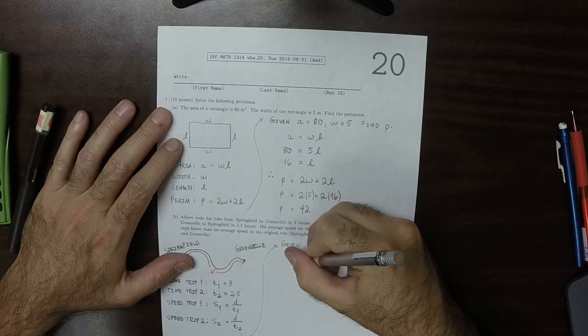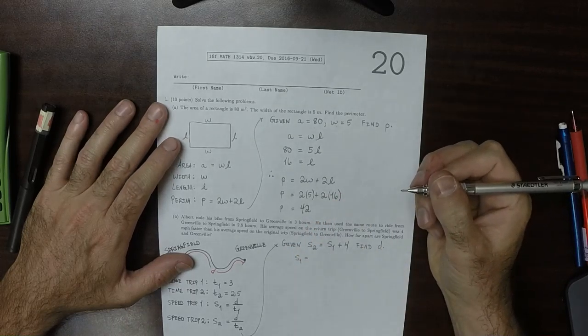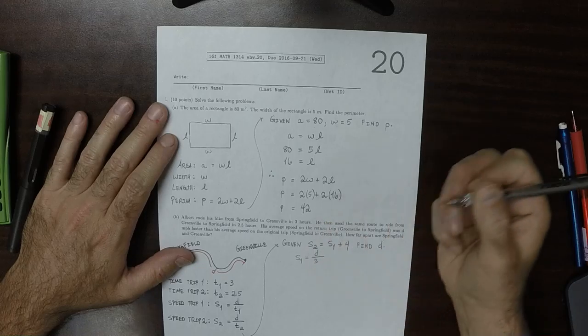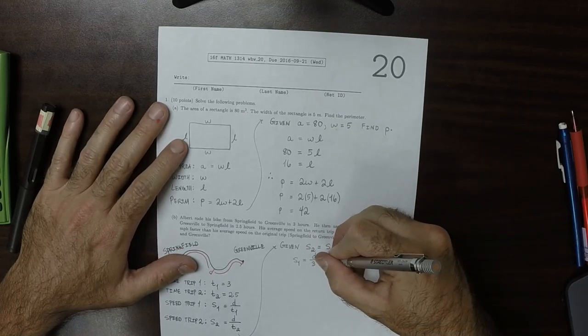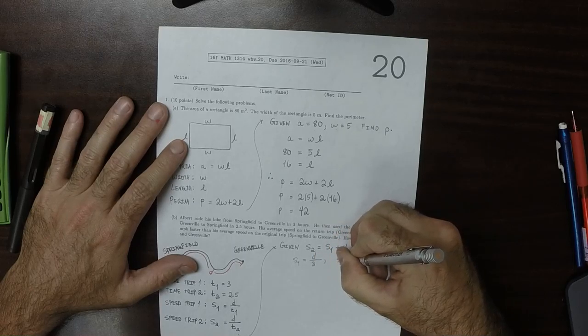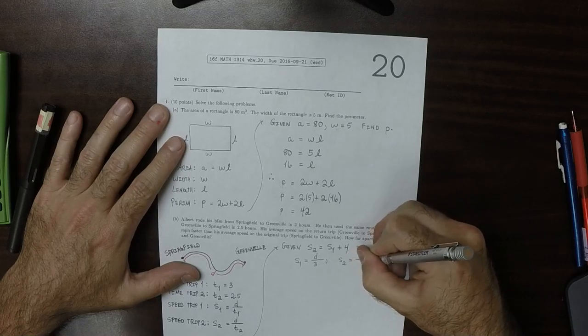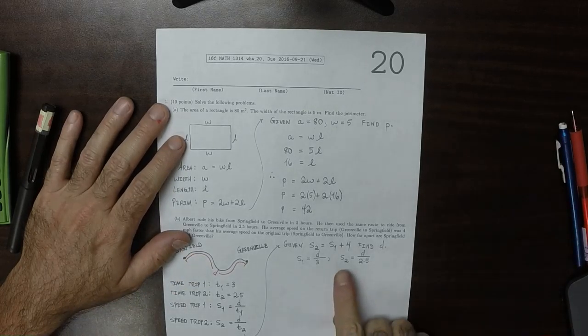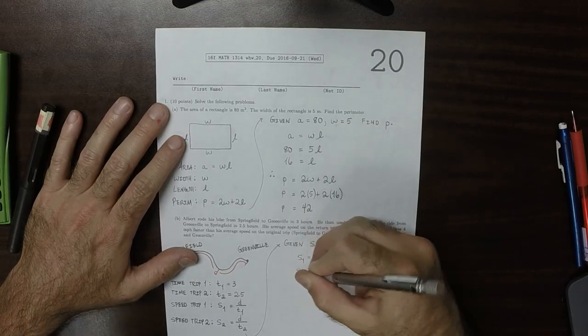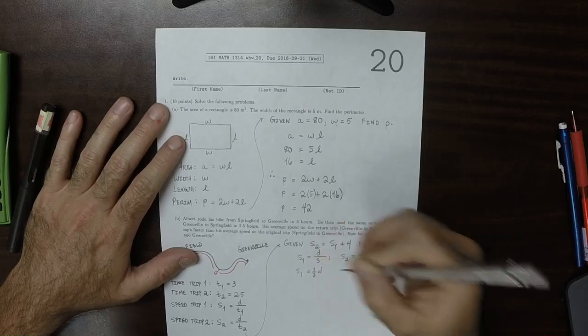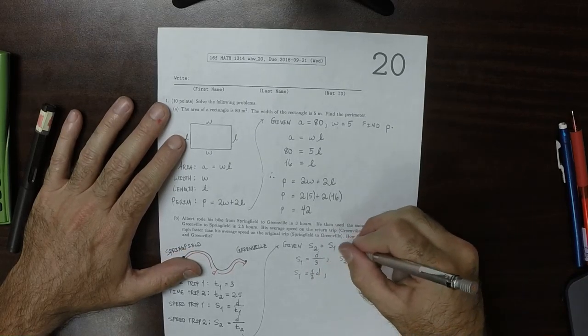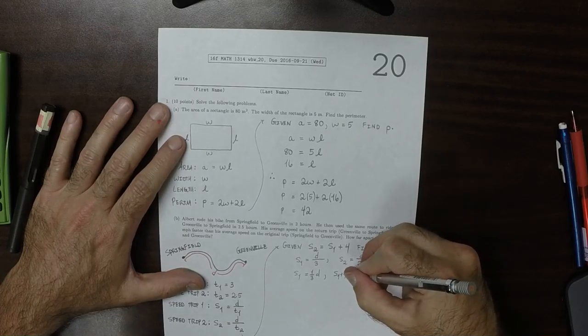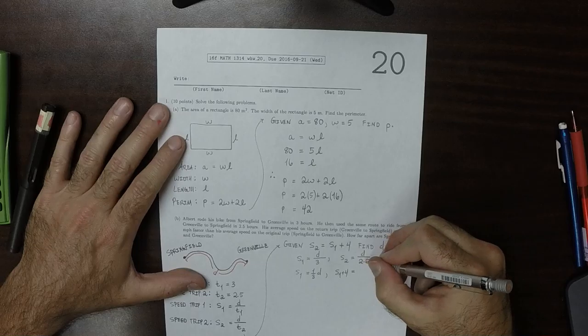So S1 is D, which is what we're looking for, over T1. T1 is 3, and we know that S2 is D over 2.5. And besides that, we also know that S2 is S1 plus 4. So S1, I'm going to write this as 1 third D, is S1 plus 4, because I replaced S2 with S1 plus 4.